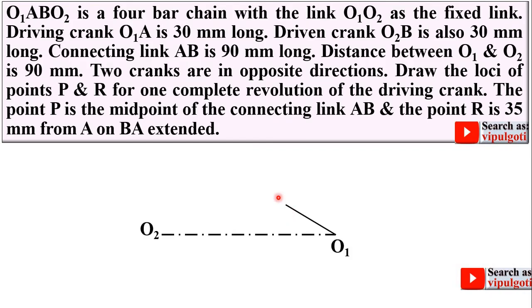Then draw one line which is 30 degrees to this horizontal line and the length of this O1A is also given to you as 30 mm. Then draw the circle with O1 center and O1A as the radius.